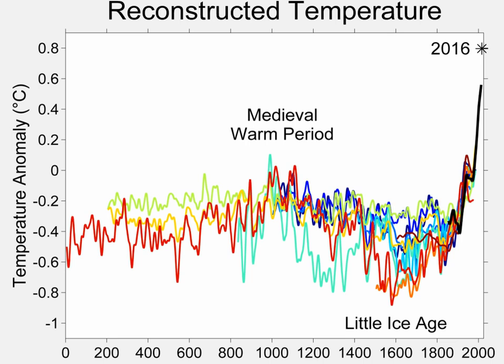The Little Ice Age was a period of cooling that occurred after the medieval warm period. Although it was not a true ice age, the term was introduced into scientific literature by François E. Mathers in 1939.